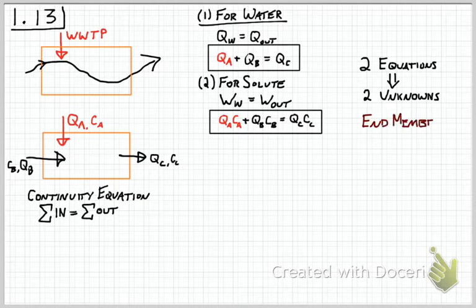And as a reminder this is what we call end-member mixing, meaning we take two distinct end-member inputs and mix them together to create their discharge-weighted output from a system.